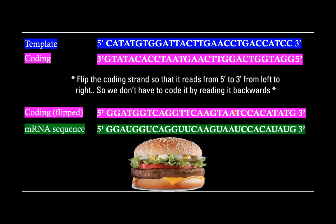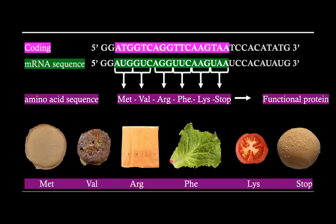If you're wondering why there are cheeseburgers everywhere, that's because we're going to be comparing ingredients of a cheeseburger to how amino acids code for proteins. So we have our coding strand, our mRNA sequence, and then we have our amino acid sequence we get from this, which produces a functional protein. Down here you can see the corresponding cheeseburger ingredients for these amino acids.